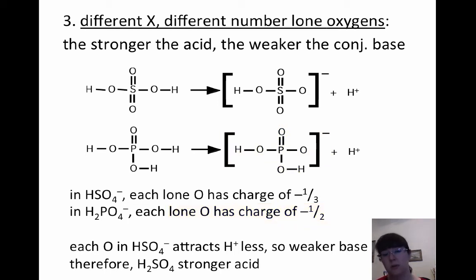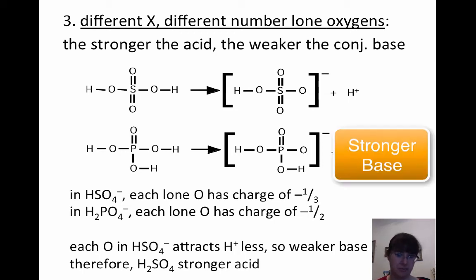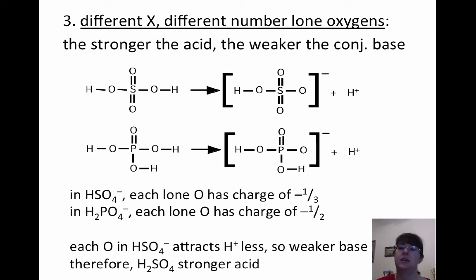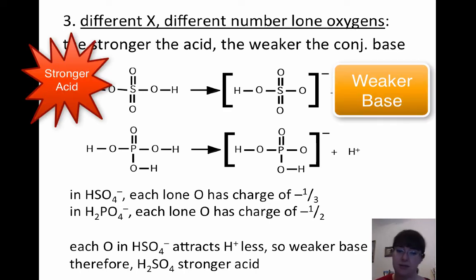Because the oxygens, the lone oxygens attached to the phosphorus have a higher charge, they are going to be able to attract that hydrogen better. So because the phosphorus can attract the hydrogen better, that's a better conjugate base, which means a weaker acid. Said the other way around, since the lone oxygens in the sulfur compound attract the hydrogen less, that's a weaker base, and therefore its acid is a stronger acid.